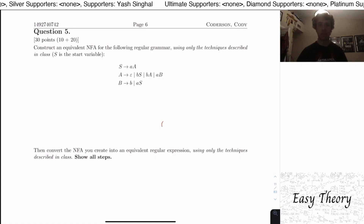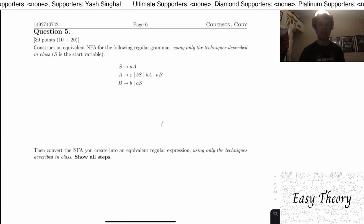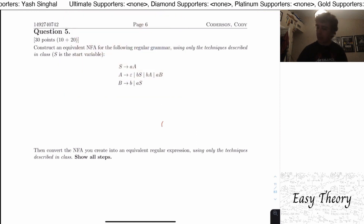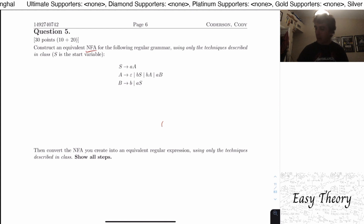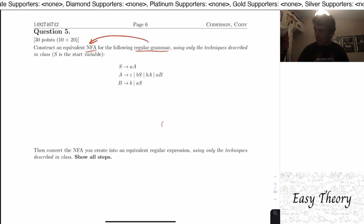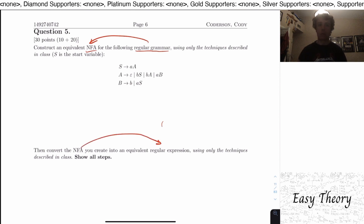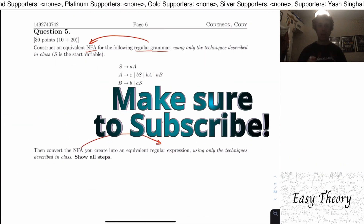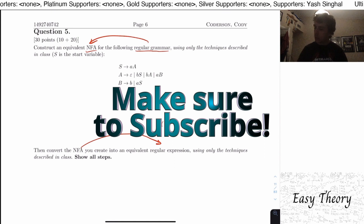Welcome back to another edition of Easy Theory. Today we're looking at an exam question from Exam Question Monday. We looked at this question on a recent live stream, which is about converting a regular grammar into an NFA, and then from an NFA we create a regular expression — so we're going from a regular grammar to an NFA to a regular expression.